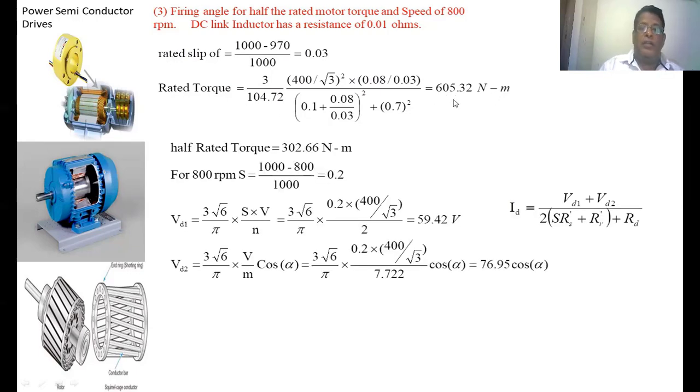Now we want half the rated torque, which is 605.32/2 = 302.66 N-m. The speed of the induction motor at half-rated torque is given as 800 rpm. The slip corresponding to that speed: S = (Ns - N)/Ns = 0.2. Vd1 = (3√6/π)·(S·V/n). Substituting all values, we get 59.42V.